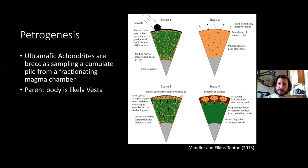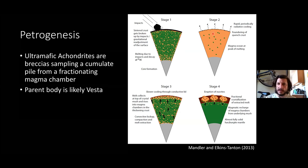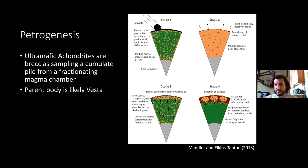Mandler and Elkins-Tanton have a cartoon of how this might have happened. The idea is accretion of Vesta, melting due to impacts and decay of aluminum-26 into a magma ocean. After the magma ocean solidifies, there's residual melt forming magma chambers closer to the surface, producing a cumulate mantle. Within these fractionating magma chambers, you have a cumulate pile going from olivine-rich material to diogenitic material to finally eucrite material on the surface as extrusive lavas.